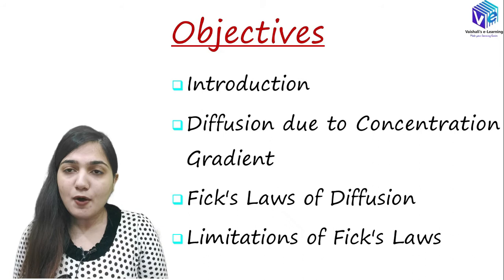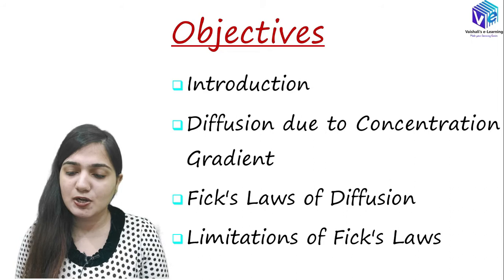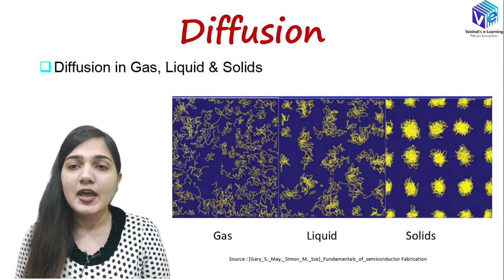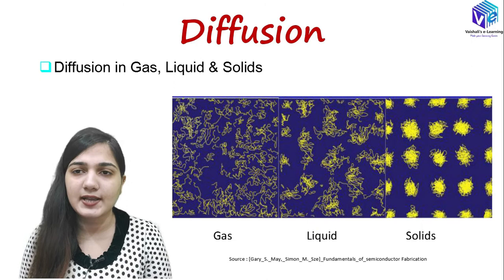We are going to see diffusion due to the concentration gradient, the rate of diffusion, and how the rate of diffusion can be found out with the help of Fick's first law and Fick's second law. We are going to see detailed analysis as well, and at last we are going to see the limitations of Fick's laws.